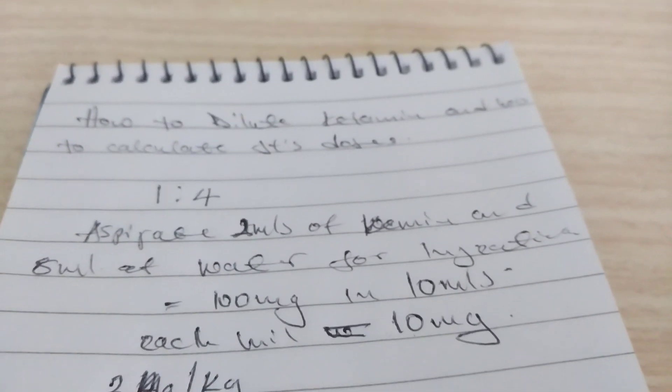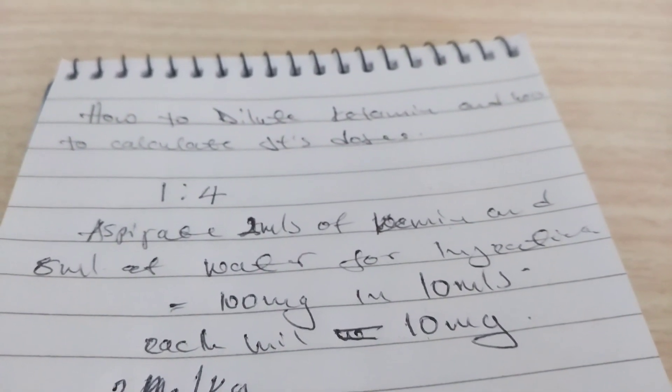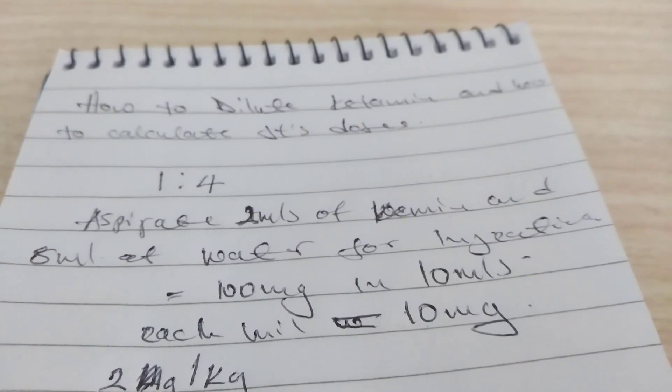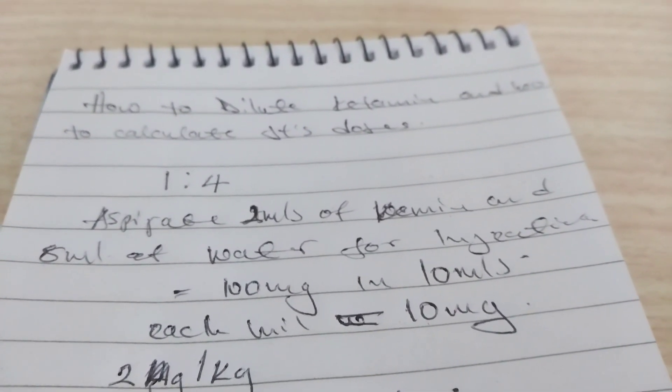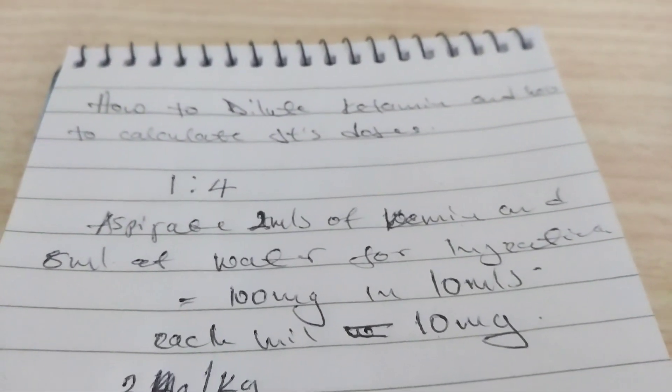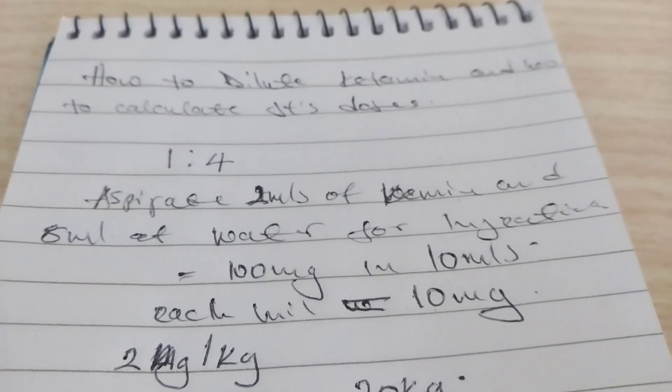If we want to make 100mg of ketamine, we aspirate 2ml of ketamine and then dilute it with 8ml of water for injection.